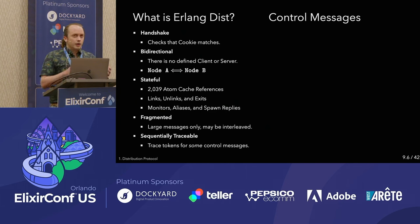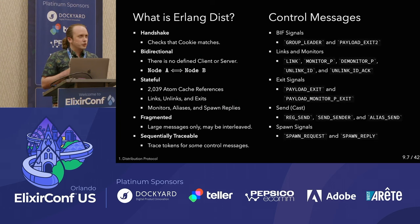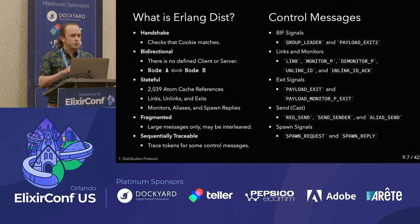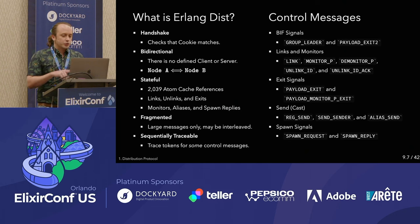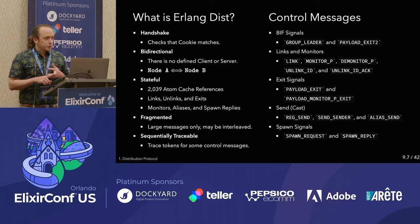Control messages are basically dist operations — analogous to HTTP verbs like GET or POST. You have things like group leader, payload exit 2, link, monitor, registered send to a registered process, send sender, alias send, and spawn request and spawn reply. Some of them have a payload associated; for example, send sender contains the PID you're sending from and to, and then the payload is whatever message you're actually sending.